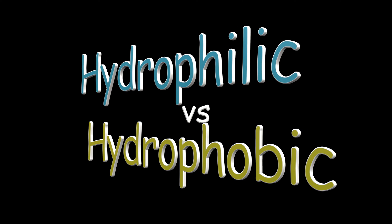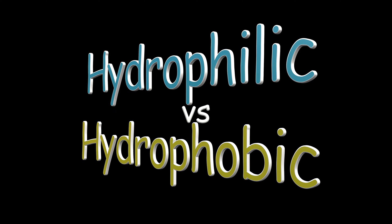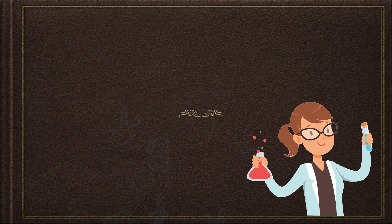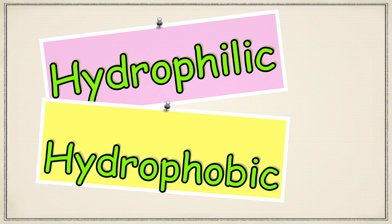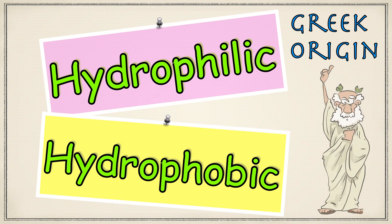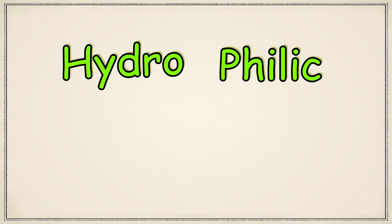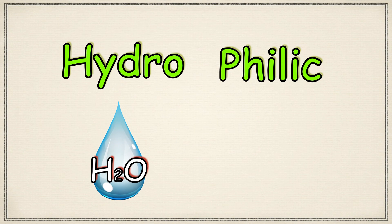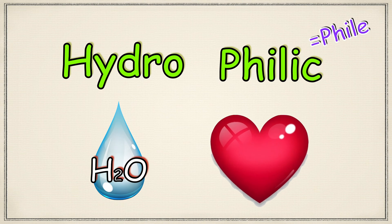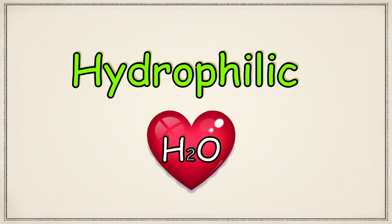Hydrophilic versus hydrophobic, brought to you by My Book of Chemistry. Before we discuss hydrophilic and hydrophobic, let's find out where these words come from. Both words have a Greek origin. In Greek, 'hydro' means water (H₂O), and 'philic' or 'phile' means love. Therefore, hydrophilic means water loving.